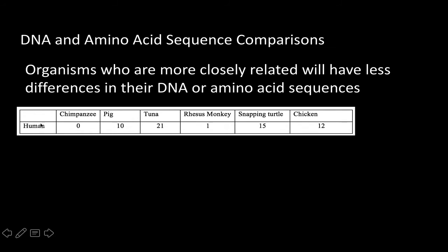It makes sense, because if they shared a recent common ancestor and they have branched off, they haven't had enough time to change and add up all those different mutations that would cause their DNA to change. So they'll have very similar DNA if they're closely related. So if you take a look here, we're comparing a human to all these different organisms, and the ones that have the least number of differences are more closely related. This is comparing the cytochrome C protein and looking at the differences in the amino acid sequences. Between a human and chimpanzee, there's zero differences. Then the rhesus monkey has one difference. Then the pig has ten differences.